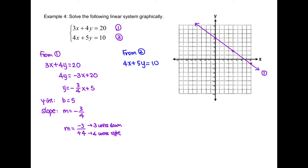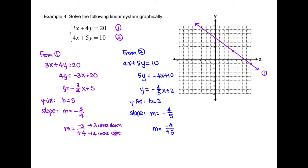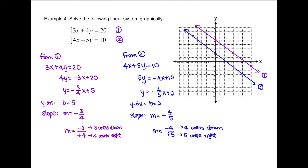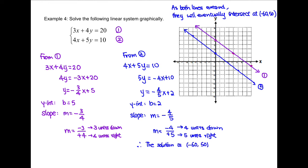From equation 2, subtract 4x on both sides, then divide by 5. The y-intercept is b equals 2, and the slope is negative 4 over 5 — meaning 4 units down and 5 units to the right from the y-intercept. From this graph, we do not see a point of intersection. However, as the lines extend on the left-hand side, they will eventually intersect at the point (-60, 50). This is why we always prefer to use algebra to solve a linear system instead of a graph. The solution is at (-60, 50).